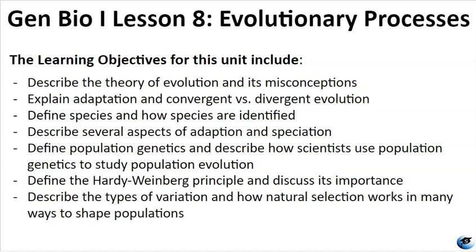The learning objectives for this unit include describing the theory of evolution and its misconceptions. We'll explain adaptation and convergent versus divergent evolution, define species and talk about how species are identified, discuss several aspects of adaptation and speciation, define population genetics and talk about how scientists use population genetics to study population evolution.